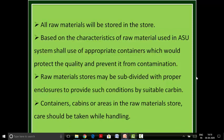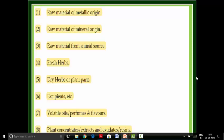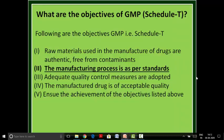While designing such containers, cabins, or areas in the raw material store, care may be taken to handle the following different categories of raw materials: raw materials of metallic origin, raw materials of mineral origin, raw materials from animal source, fresh herbs, dry herbs or plant parts, excipients, water, oils or perfumes and flavors, and finally plant concentrates, extracts, and exudates or resins.